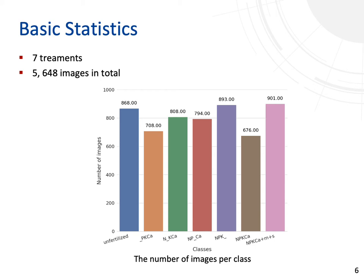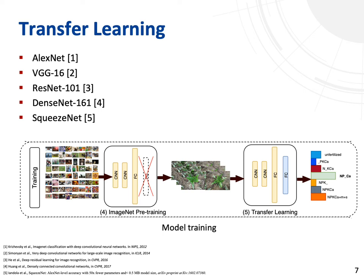Here is a bar diagram about the number of images per class in our dataset. There are seven treatments and more than 5,000 images in total.